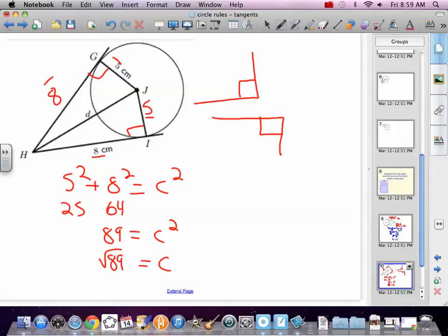If you had a calculator handy, you could do it. I'm okay if you told me square root of 89, which is around 9.3-ish. So we just found that segment JH because it's the hypotenuse of a right triangle, and we used two tangent rules.